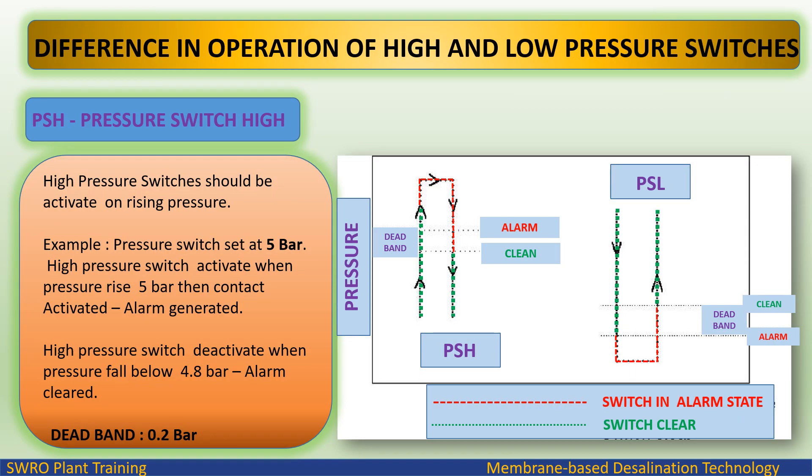Difference in operation of high and low pressure switches. High pressure switches should activate on rising pressure. Example: pressure switch set at 5 bar — when pressure rises to 5 bar, the contact is activated and an alarm is generated. The high pressure switch deactivates when pressure falls below 4.8 bar and the alarm is cleared. Dead band: 0.2 bar.